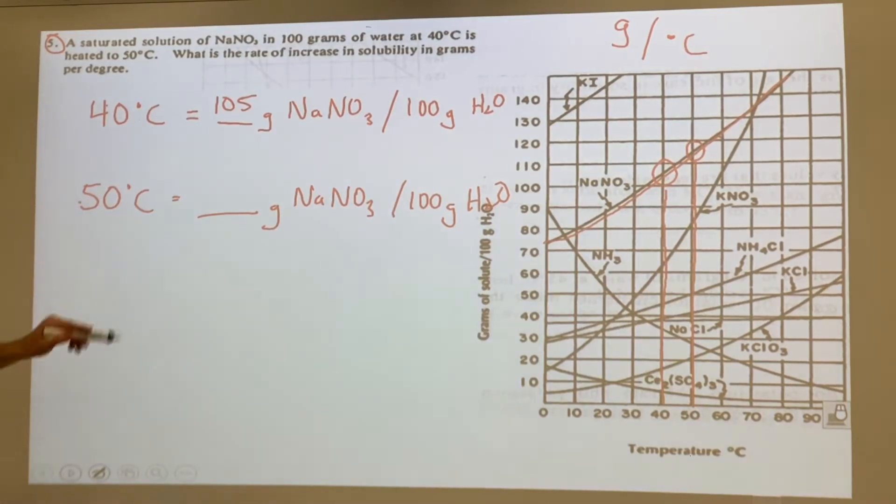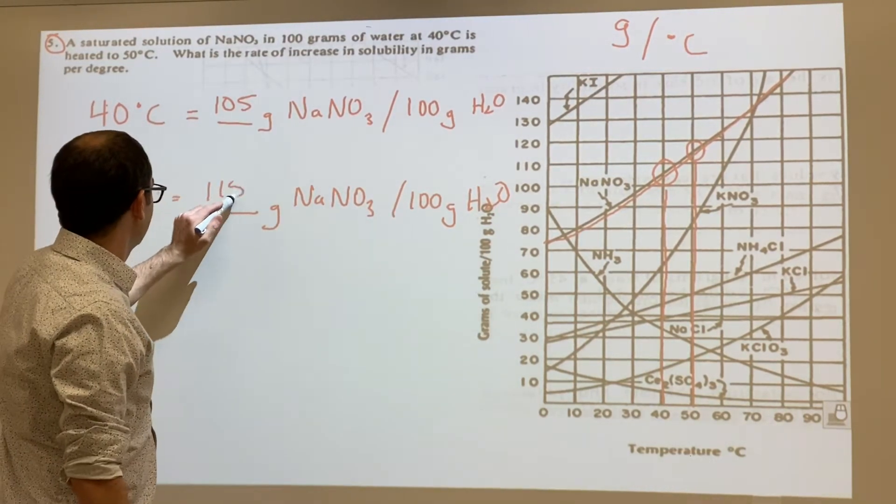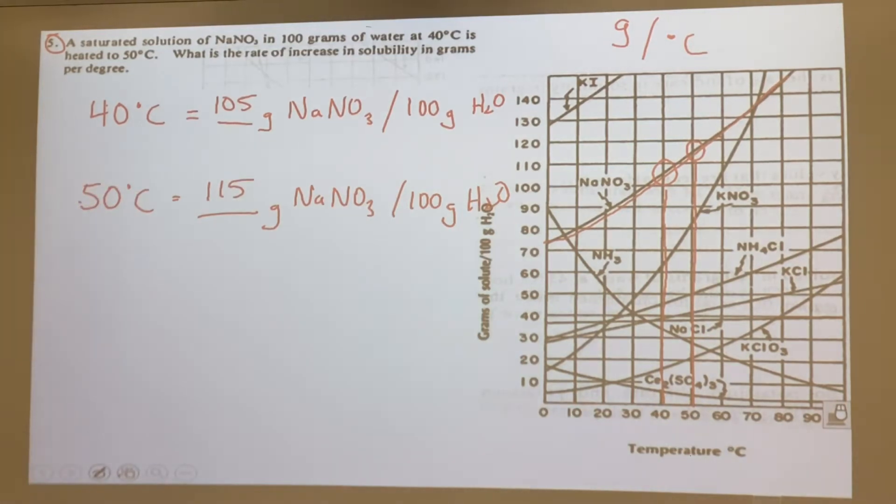So now how do we figure this out in grams per degree Celsius? We'll figure out the difference. How much did the grams change? 10, yeah. Now notice that we're not dividing this one right, because the temperature is changing here.